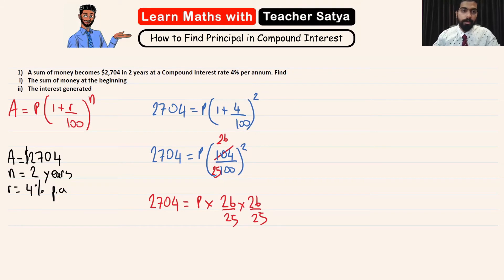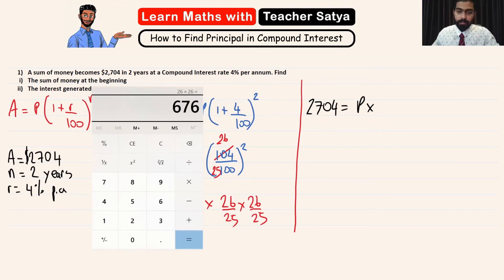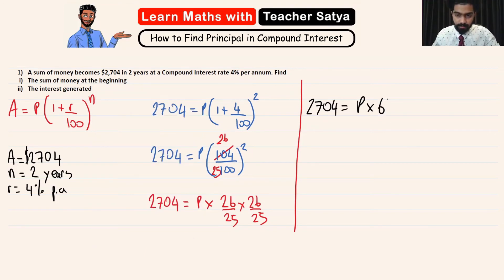So 2704 = P × (26/25) × (26/25) as it is raised to the power of 2. Now let's go ahead and complete this question. 2704 = P × let's use the help of a calculator to see what is 26 times 26, which is 676, over 25 times 25, which is 625.